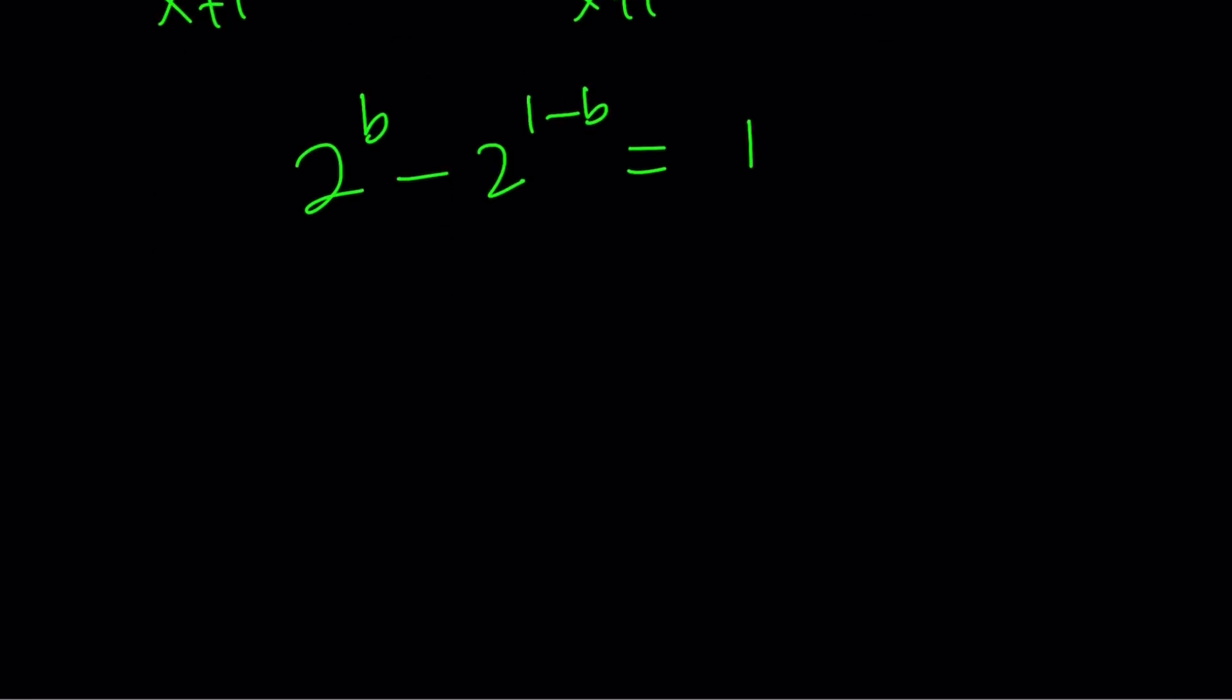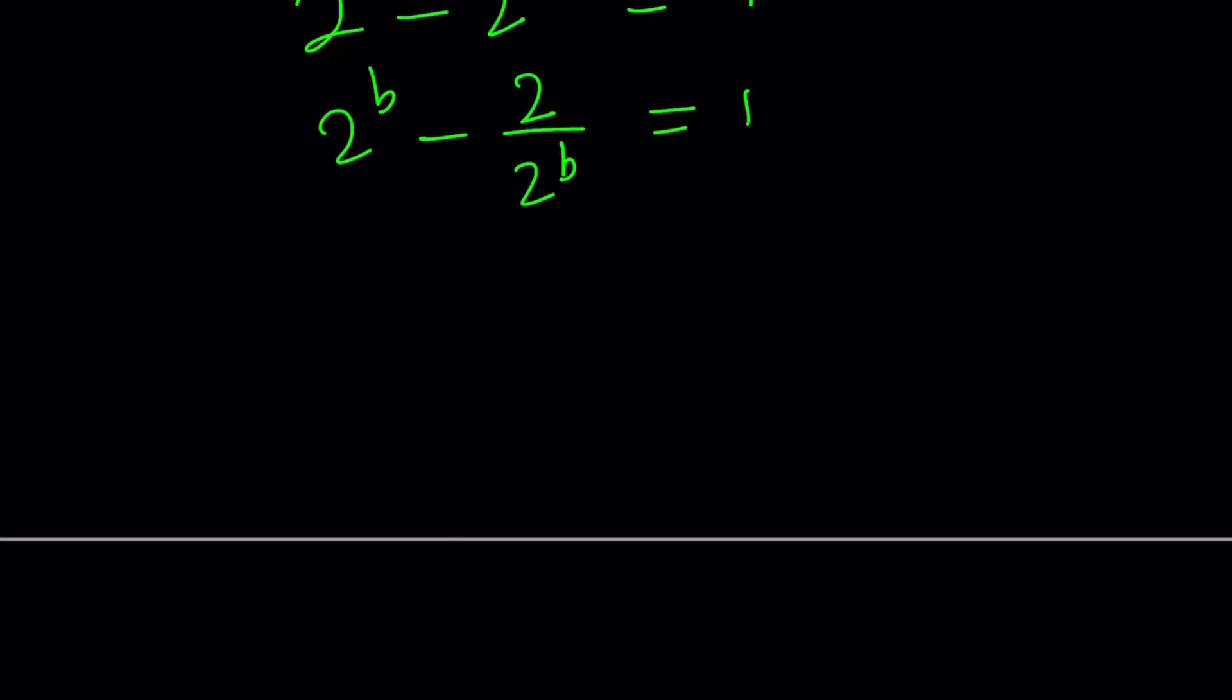Now, is this equation solvable? We can turn it into a quadratic. Let's split it up. 2 to the power 1 minus b can be written as 2 to the power 1 divided by 2 to the power b by using rules of exponents. And then 2 to the power b repeats itself, so we can replace it with something else, how about a different variable like a? If 2 to the power b equals a, then we get a minus 2 over a equals 1. Multiply both sides by a, you get a squared minus 2 equals a.